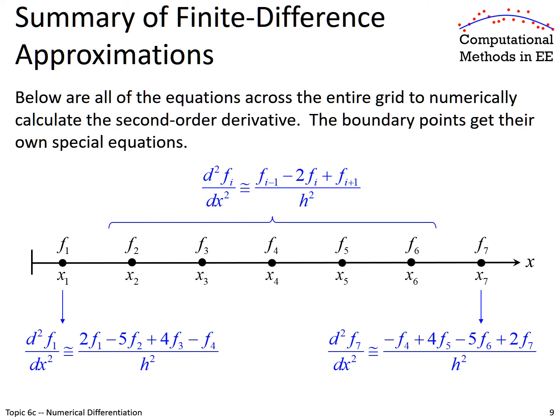Ultimately, we want to calculate the second-order derivative at every single point in our grid. For points f2 to f6, we can use our ordinary finite difference approximation — we set up a for loop and go over all of those. At the boundary points, we had to derive their own unique finite difference approximations. In the next section, when we talk about how to do this in MATLAB, we'll proceed with this.